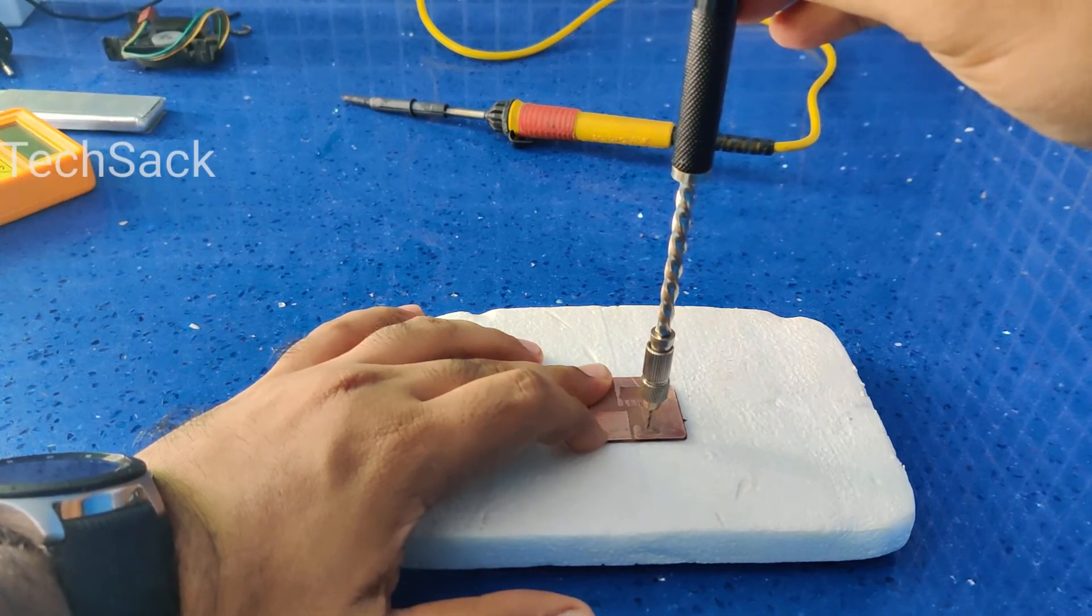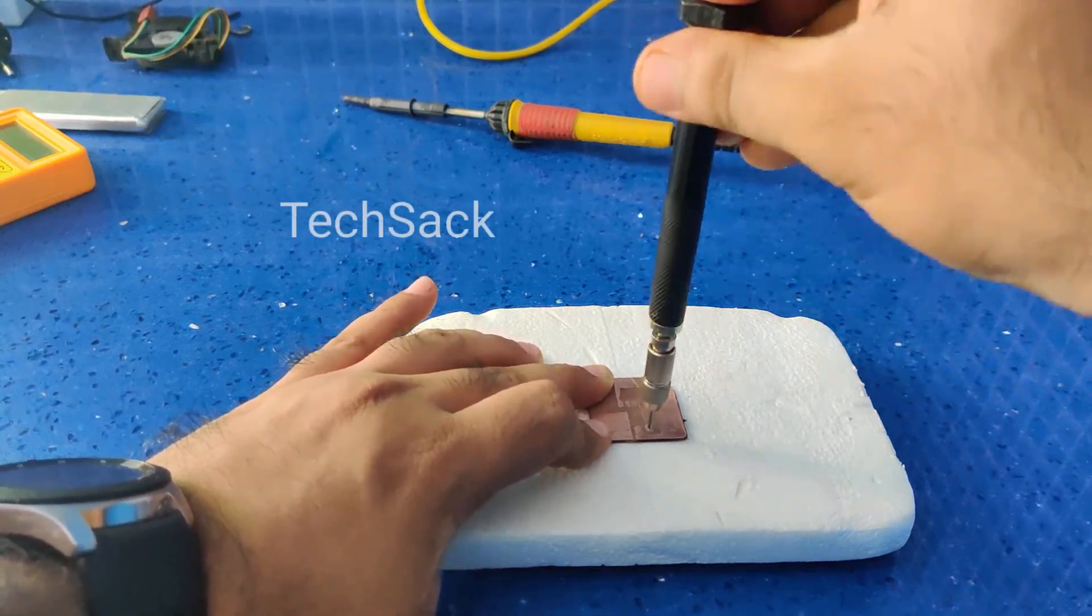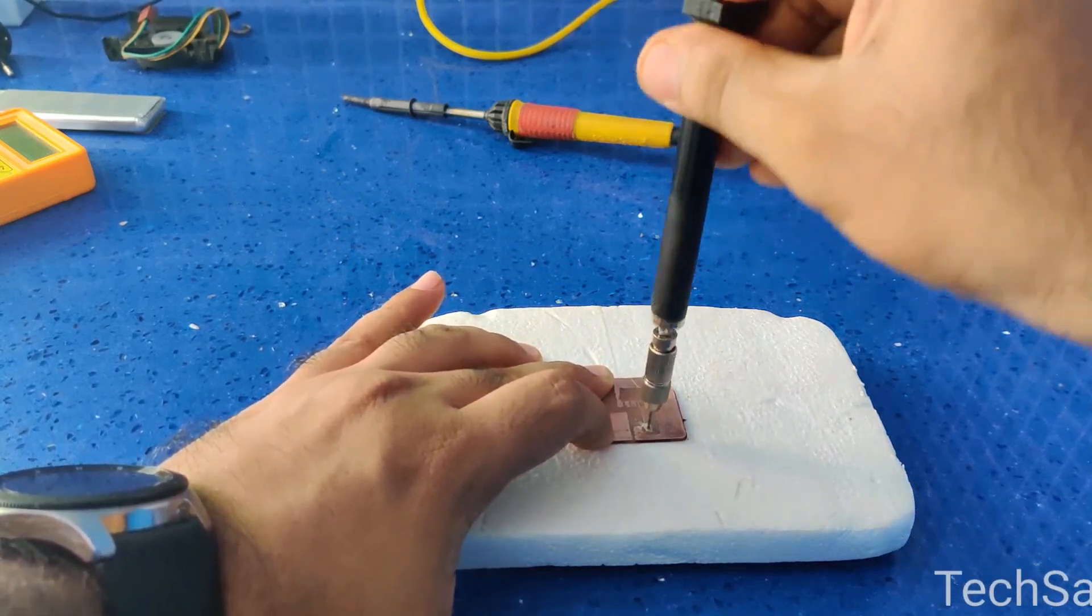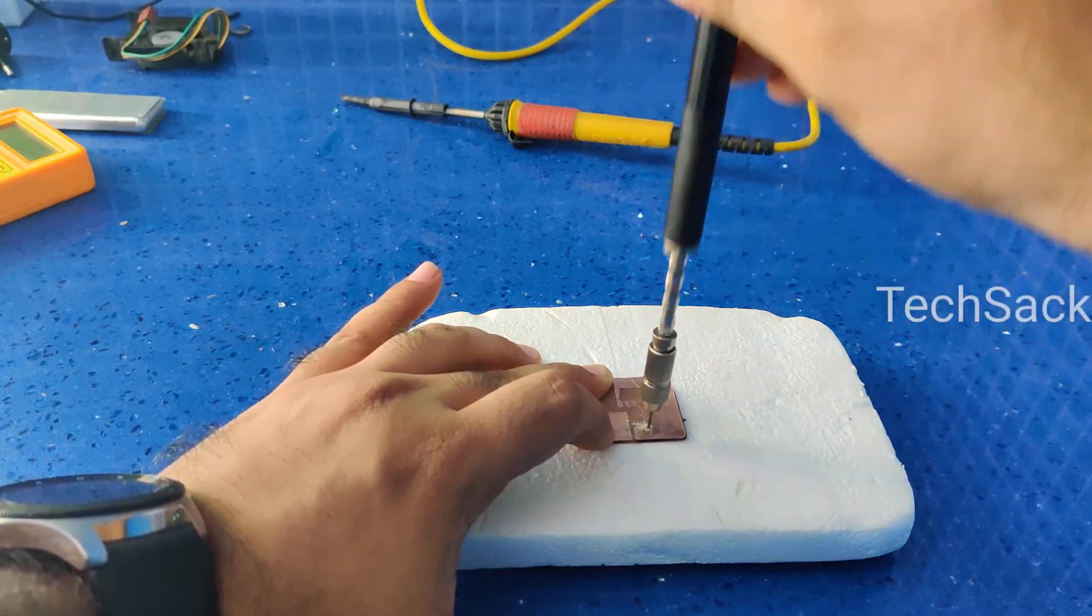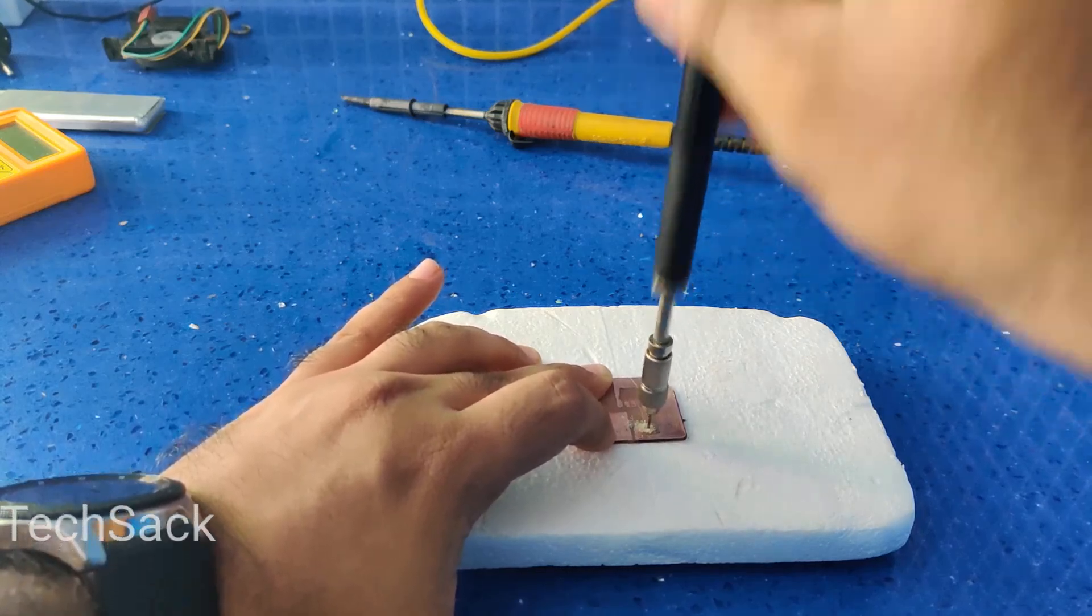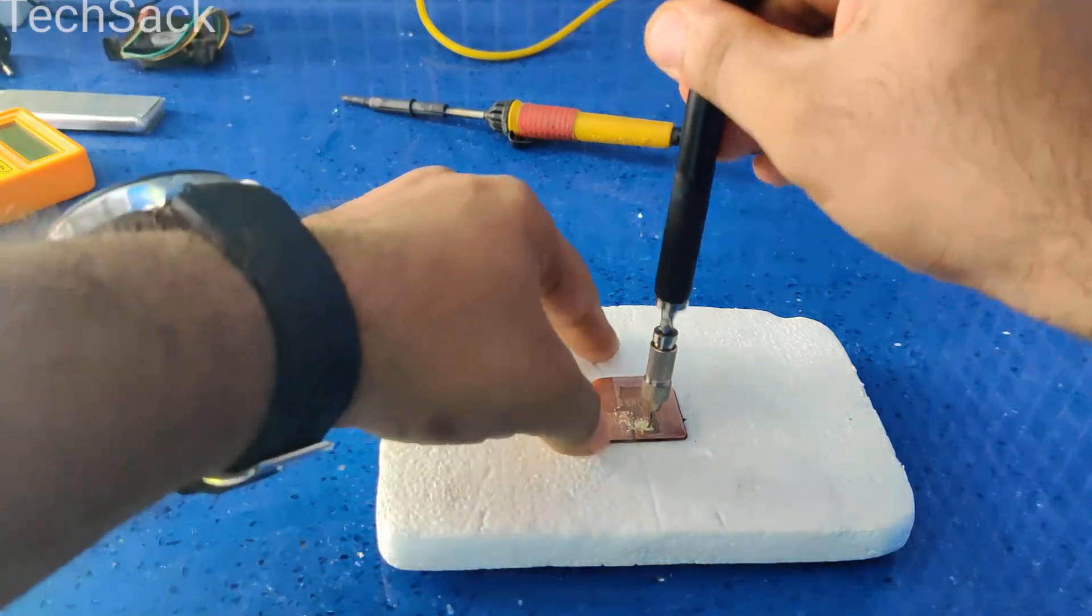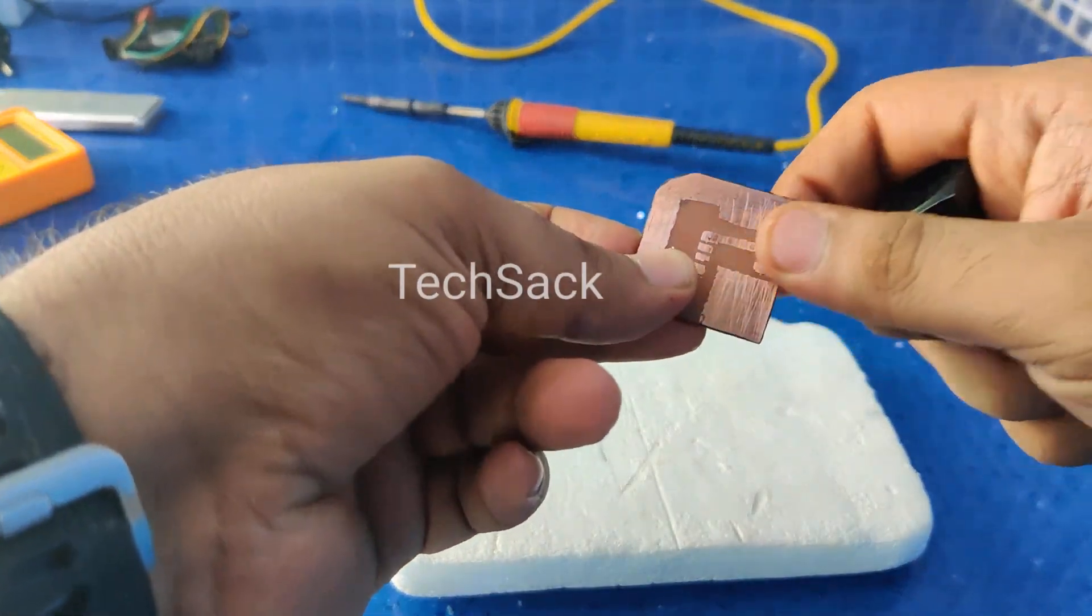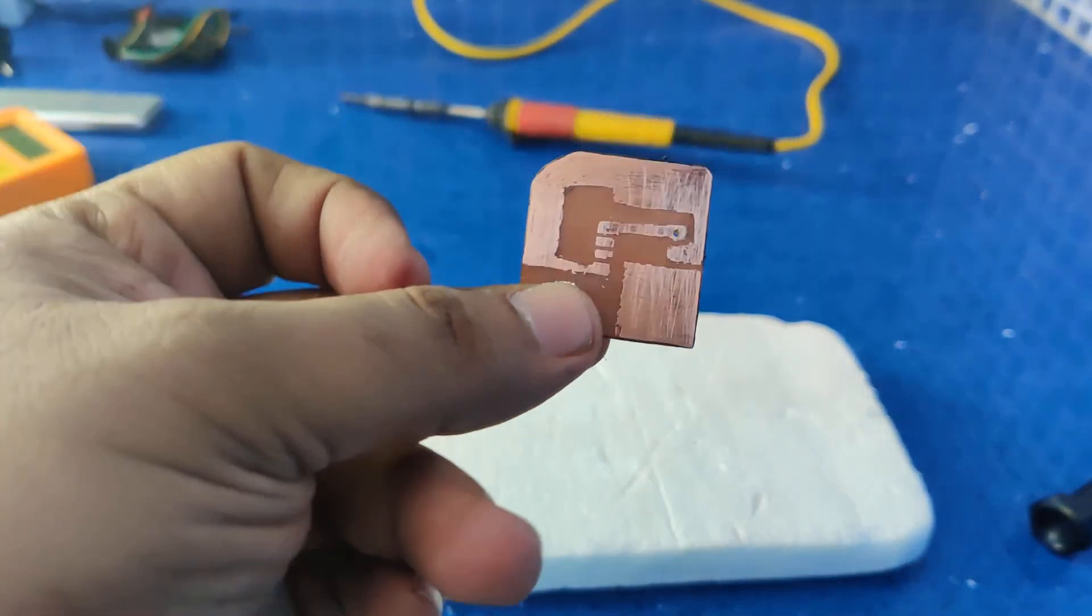Here I keep the drill bit on the point where I need to drill the hole. This is how it starts running the holes on the PCB. And here we have the hole. Now let me finish drilling all the holes on this PCB.